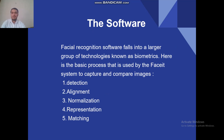This is mainly software based technology. Facial recognition software falls into a larger group of technologies known as biometrics. Here is the basic process used by the system to capture and compare images. There are two important steps: capture and compare. For this, the software performs five steps: first is detection, second is alignment, third is normalization, fourth is representation, and fifth is matching.